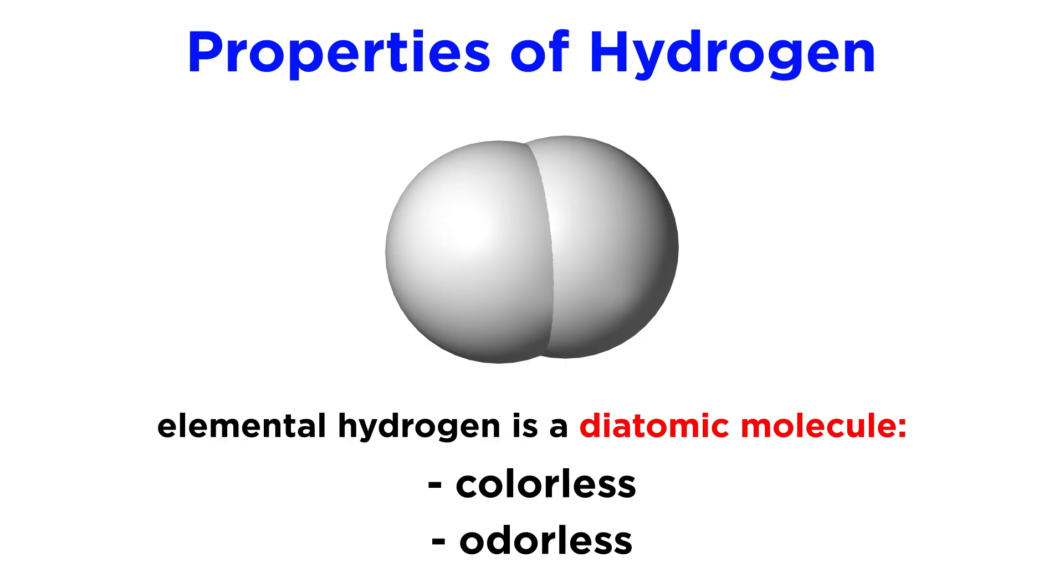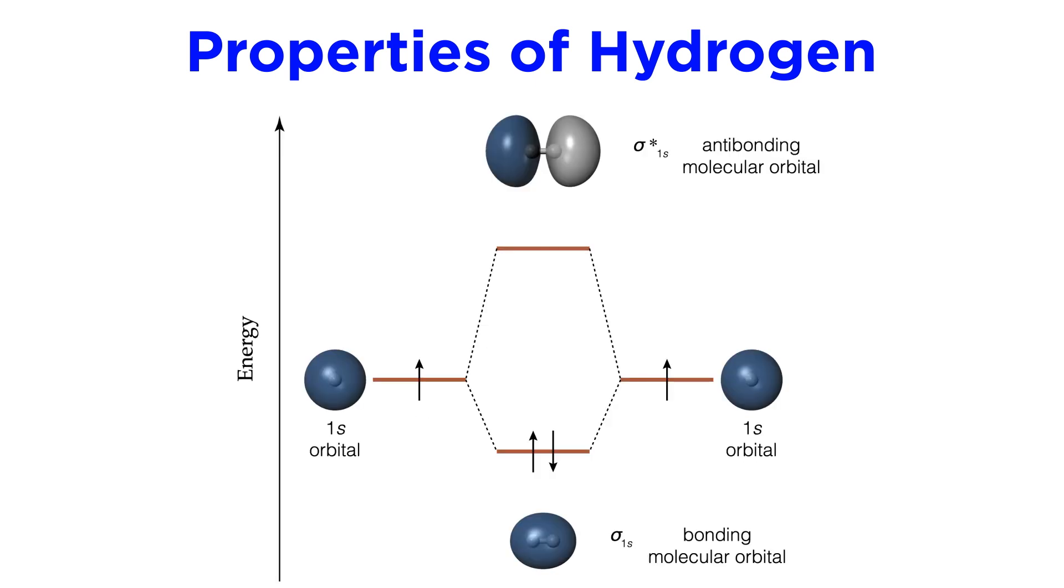Given that hydrogen atoms can make one covalent bond, hydrogen is diatomic in its elemental form. H2 is a colorless, odorless gas, and we can describe its bonding behavior with this molecular orbital diagram.